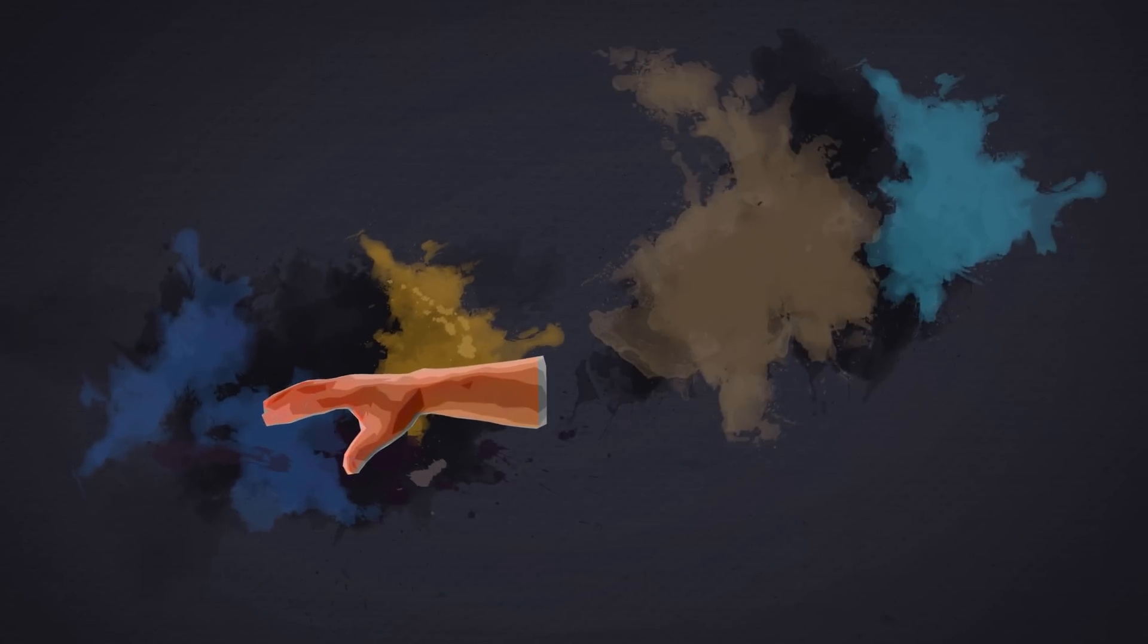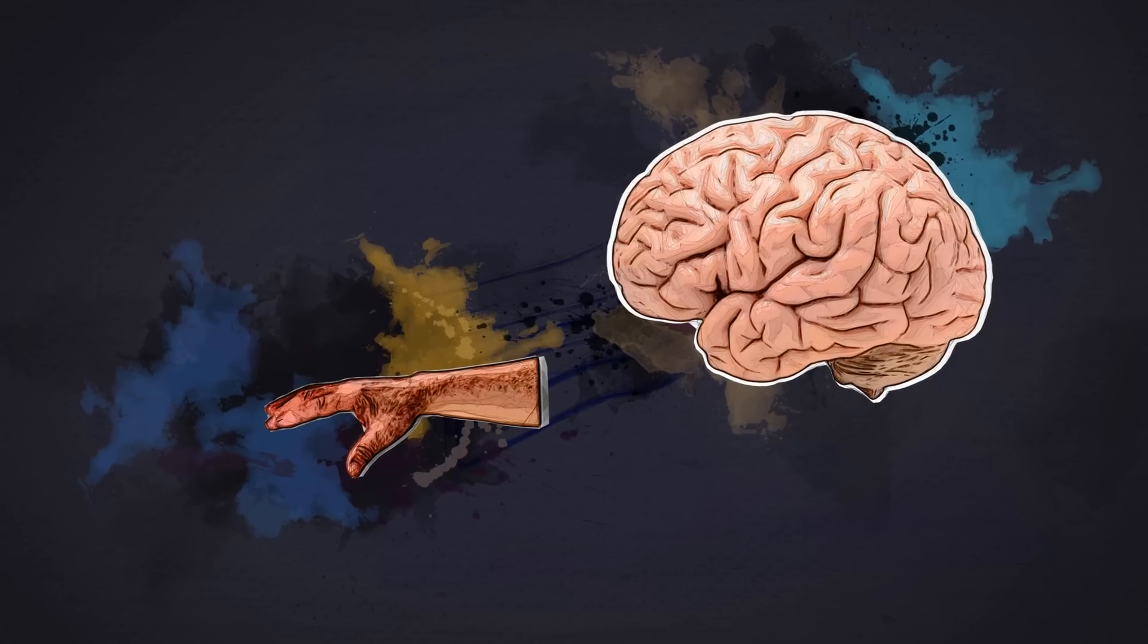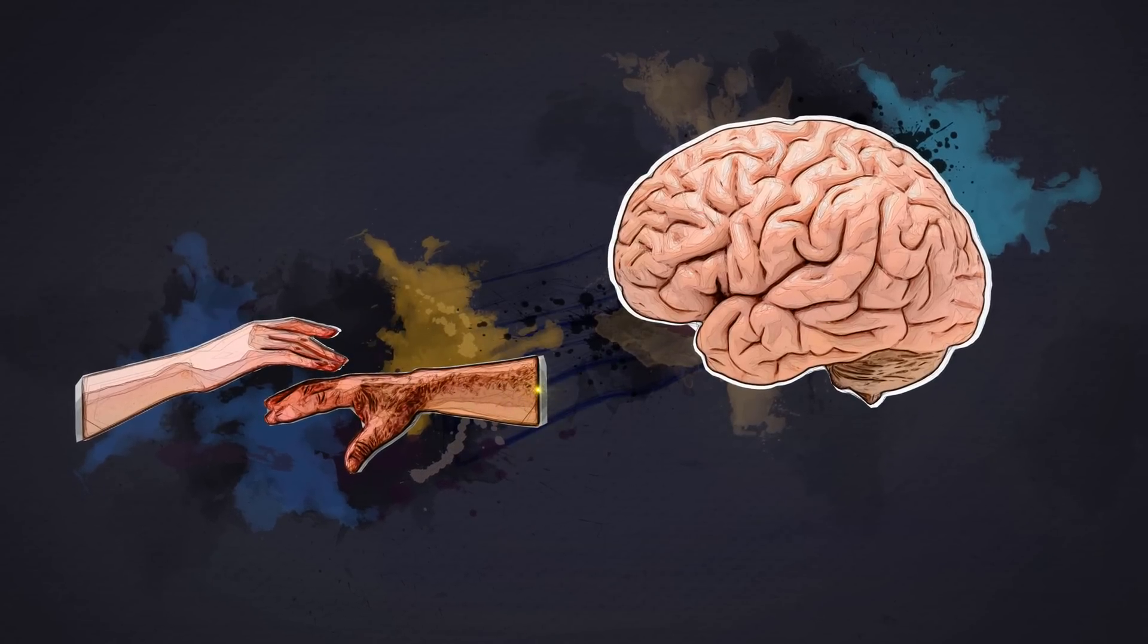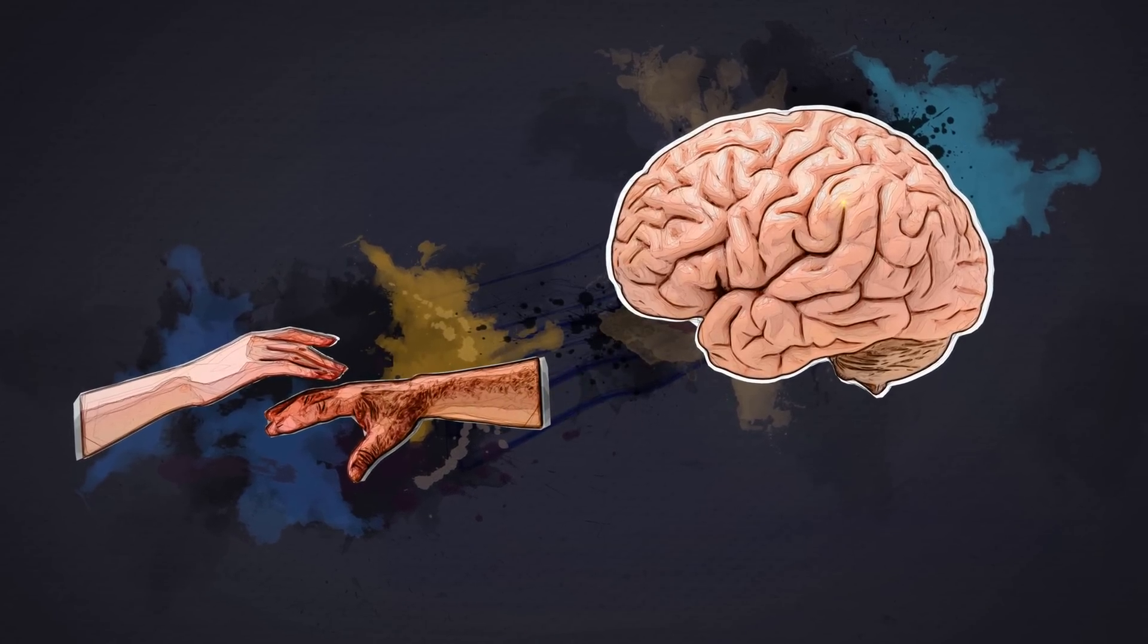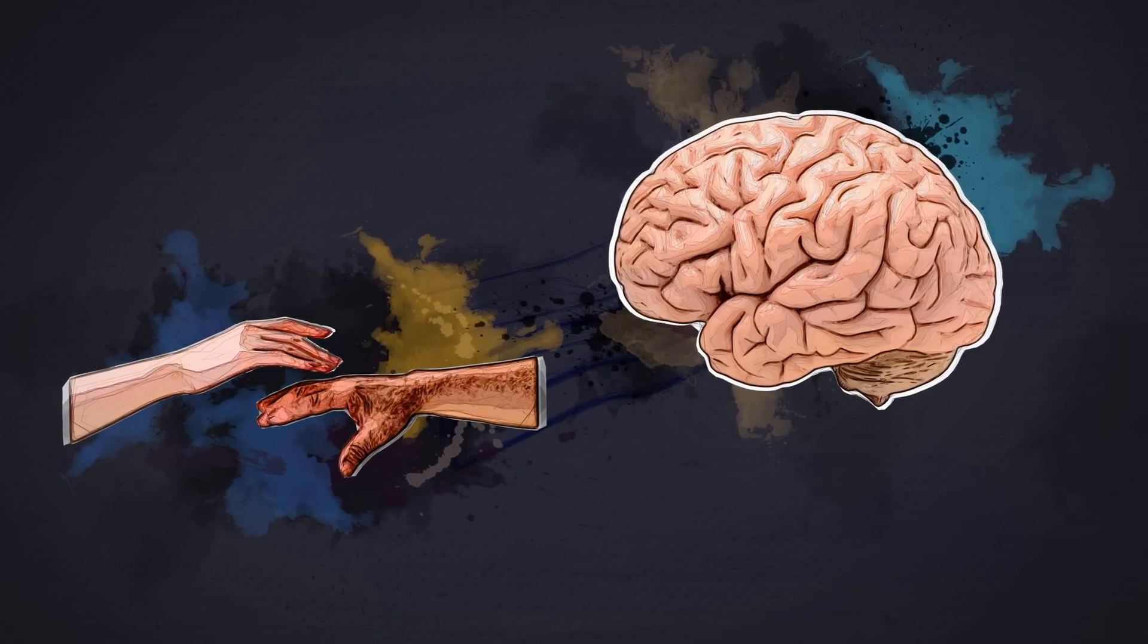Well, first we have to understand how we normally feel things. Every body part is connected to specific neurons in the brain. When you detect a physical stimulus, when you're touched, that body part immediately sends a signal to its corresponding neurons in the brain. And when that signal is interpreted by the brain, that's when you actually feel the stimulus.